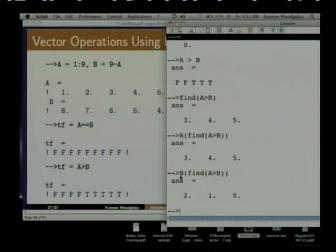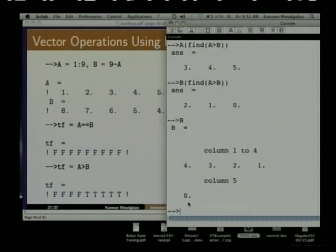This says: in vector B, extract elements 3, 4, 5 and give it to me, and it is 2, 1, 0. We can of course check that by typing B — B is this whole thing, B of 3, 4, 5 is 2, 1, 0, that is what we have got.